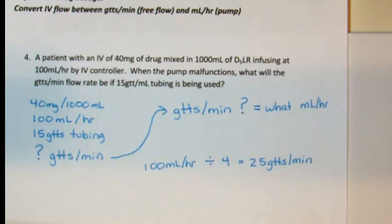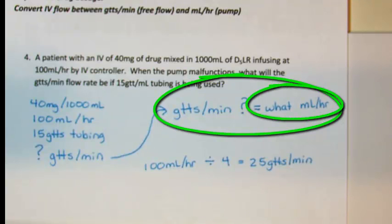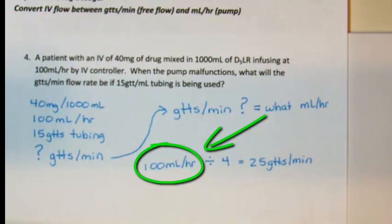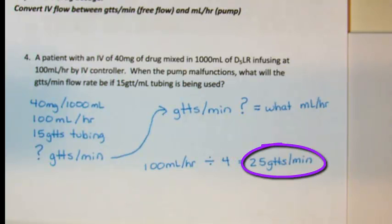Because this question is asking for drops per minute, this will be a clue that the only way this problem could be completed is by beginning with a milliliter an hour flow rate to make this conversion. Knowing that, using the 100 milliliter per hour flow rate and dividing this by the magic number of 4 based on our 15 drop tubing results in 25 drops per minute as the new flow rate by gravity.